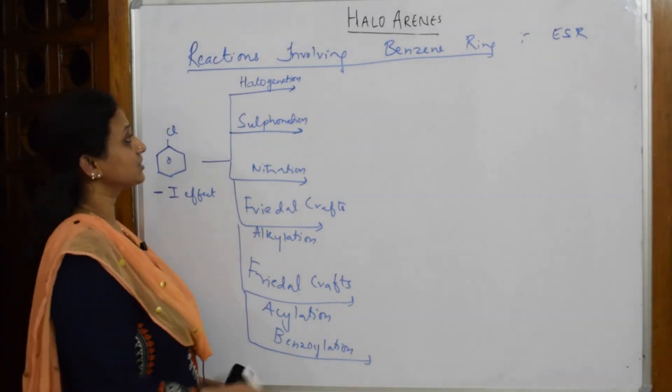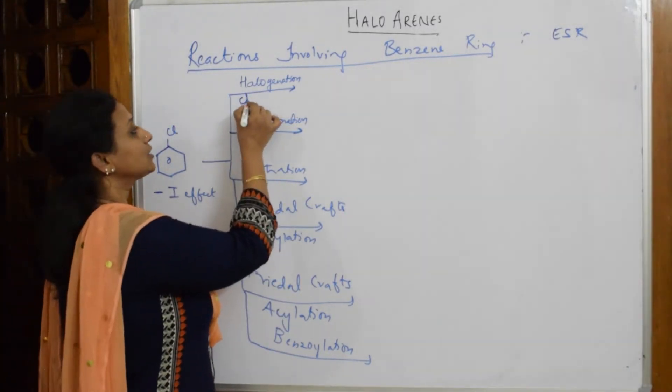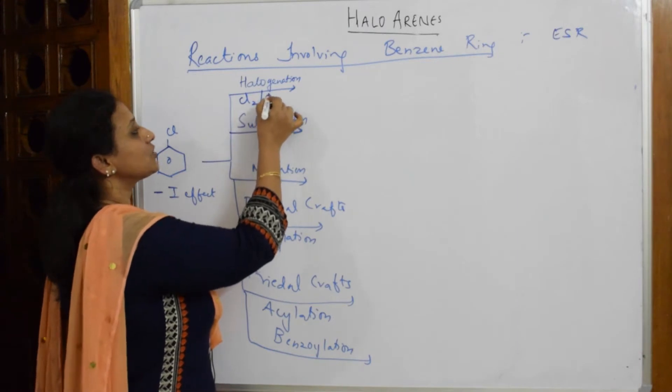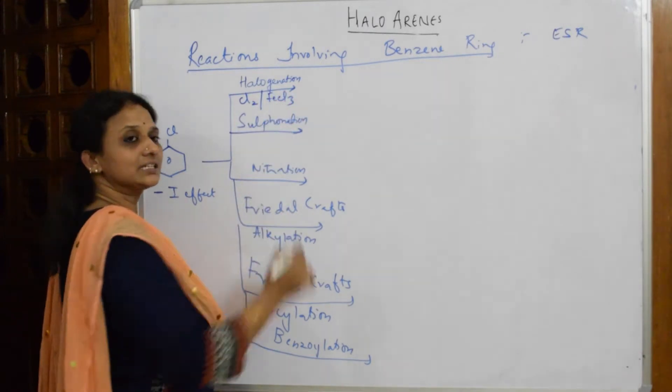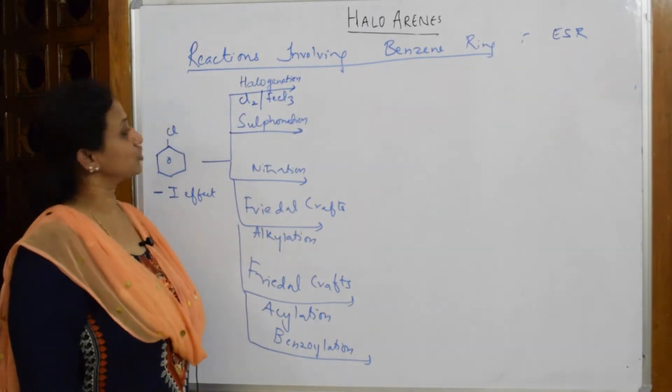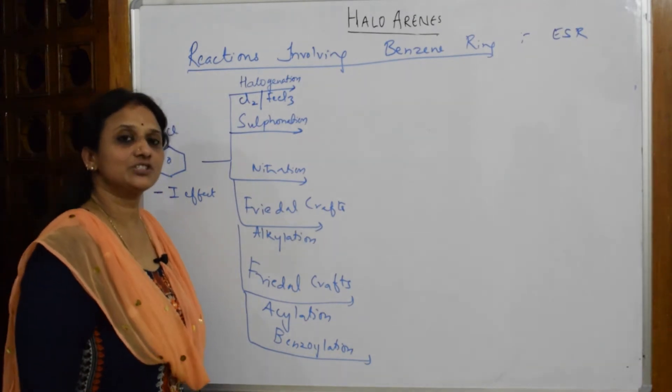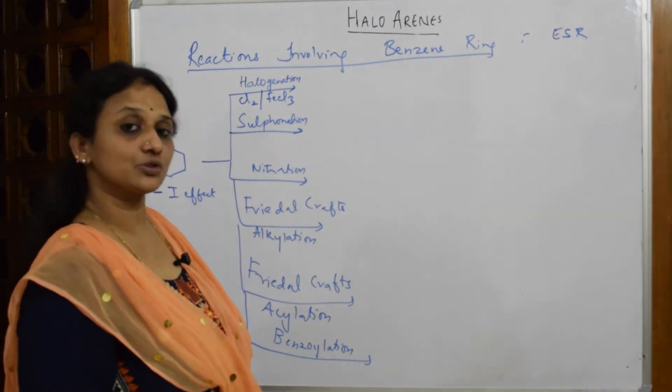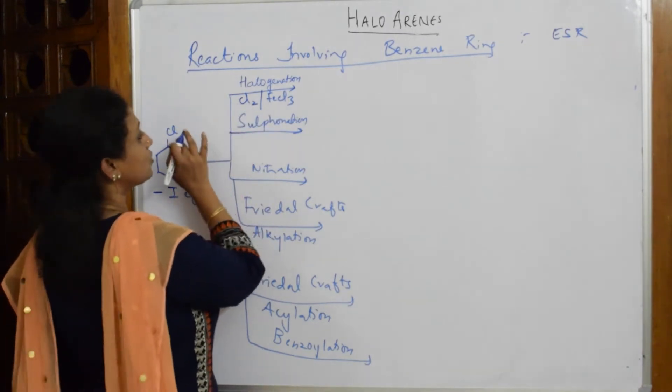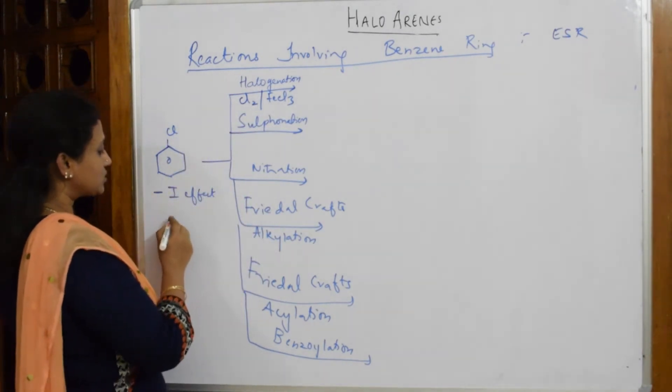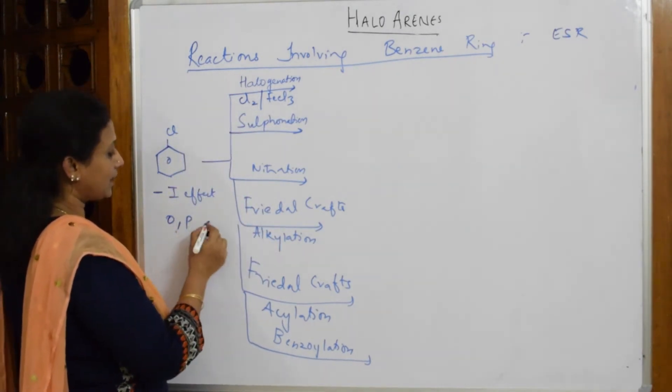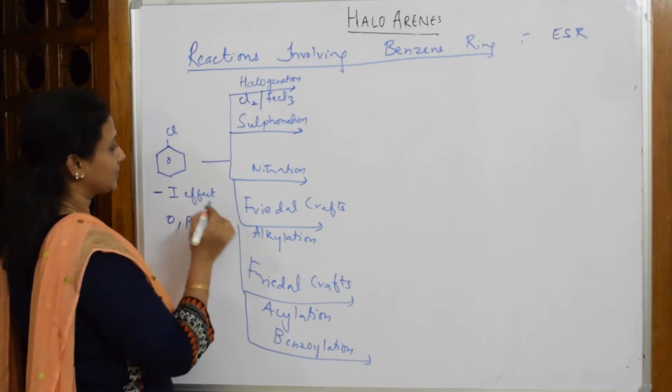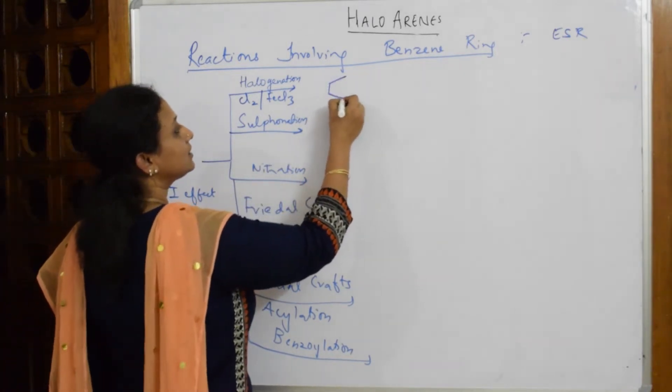For the halogenation reaction, we're going to add chlorine in the presence of FeCl3. This is going to act as a Lewis acid and halogen carrier, as we have studied. It's going to supply chlorine. What product do I get? It is ortho and para directing. Let us start here. I get ortho-chlorobenzene plus para-chlorobenzene.